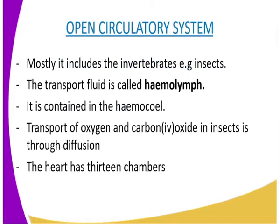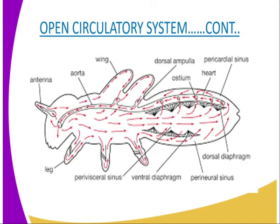Now we are going to start with the open circulatory system, which we have said is mostly found in insects. Insects are an example of animals that exhibit an open circulatory system. In insects, the transporting fluid — the haemolymph — is contained in the haemocoil within a dorsal tubular heart.